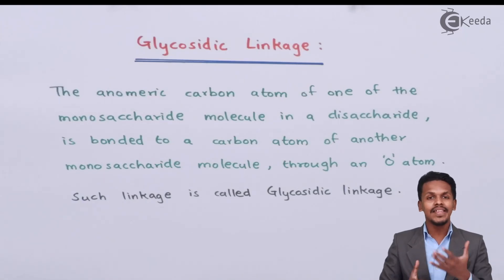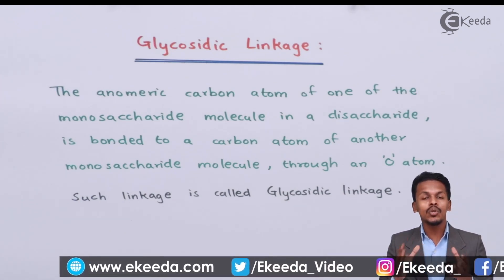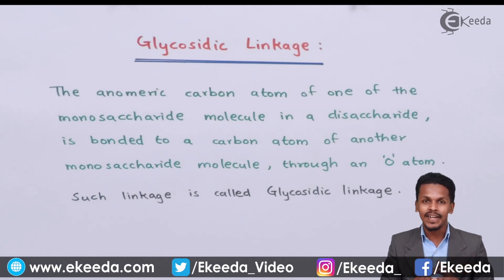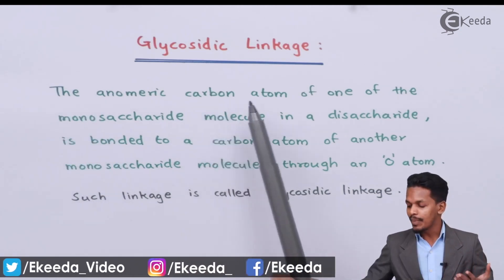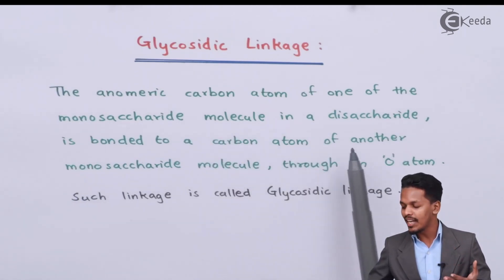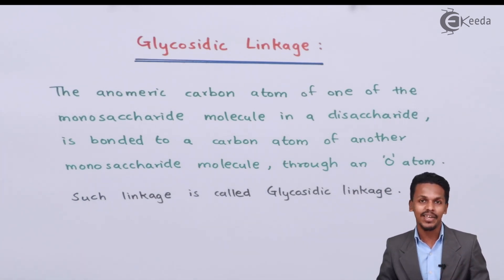In the previous example, we discussed how to write the Haworth projection formula. Now based on that, we are going to talk about glycosidic linkage. When two monosaccharides combine with each other to form a linkage, that is called a glycosidic linkage. More precisely, the anomeric carbon atom of one monosaccharide in a disaccharide is bonded to a carbon atom of the other monosaccharide through an oxygen atom, and such a linkage is called a glycosidic linkage.